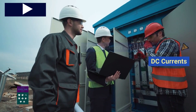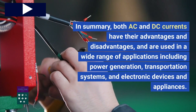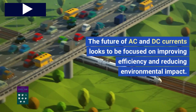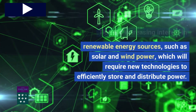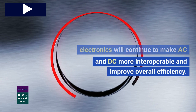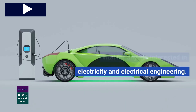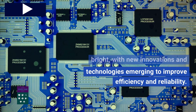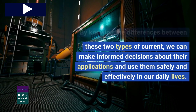In summary, both AC and DC currents have their advantages and disadvantages, and are used in a wide range of applications including power generation, transportation systems, and electronic devices and appliances. The future of AC and DC currents looks to be focused on improving efficiency and reducing environmental impact. There is increasing interest in renewable energy sources, such as solar and wind power, which will require new technologies to efficiently store and distribute power. Advancements in power electronics will continue to make AC and DC more interoperable and improve overall efficiency. Understanding the principles of AC and DC currents is vital for anyone interested in electricity and electrical engineering, and by knowing the differences between these two types of current, we can make informed decisions about their applications and use them safely and effectively in our daily lives.